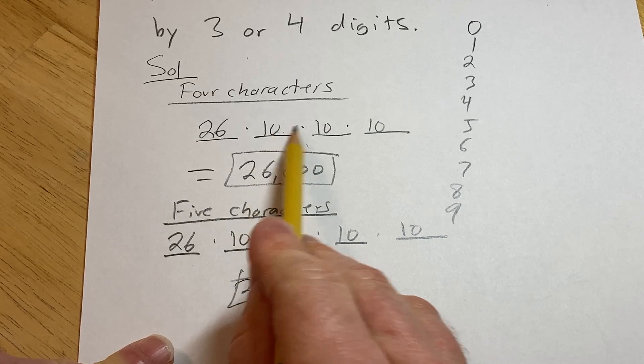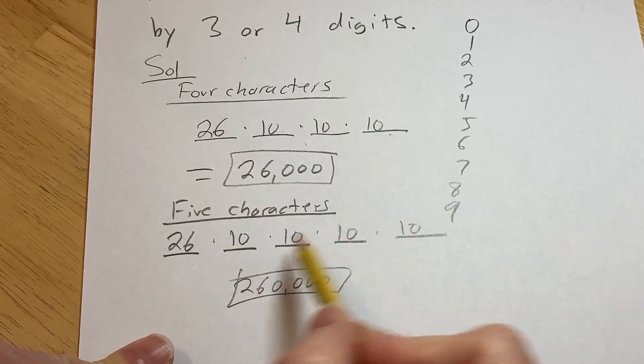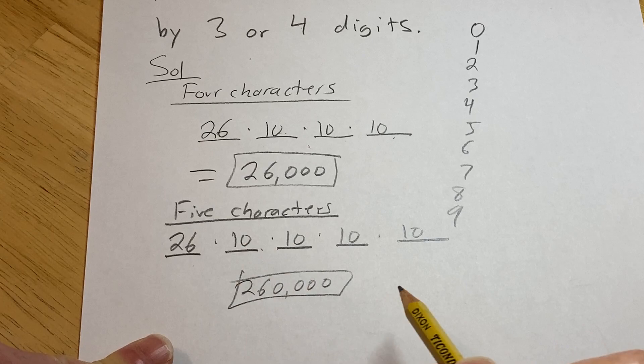Notice that you just add zeros. You have three tens, so you put three zeros. You have four tens, so you put four zeros. Very cool way.